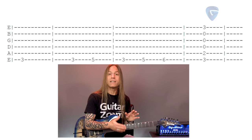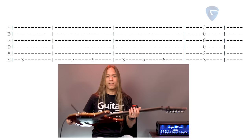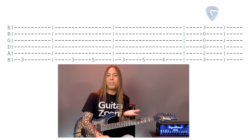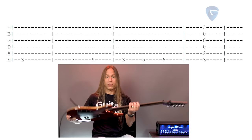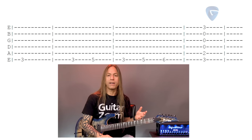Don't worry about the numbers yet — we'll get to that in just a second. The six lines directly represent the six strings. You're looking at your guitar literally in front of you. The sixth string, which is your thickest string, is on the bottom, and the first string, which is your thinnest string, is on the top. So it's like you're looking at the guitar like this.